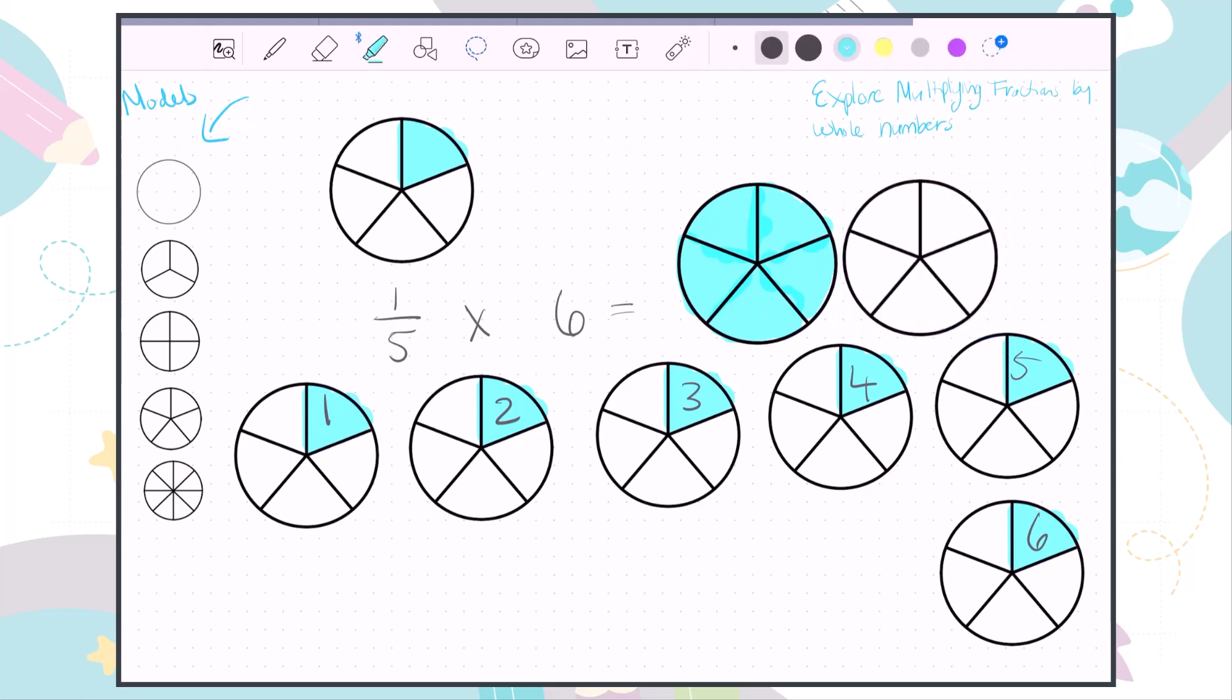And then get that 6/5 shaded in. Now as you can see, the answer is greater than one whole: one, two, three, four, five, six—6/5, which is also equal to one and 1/5.